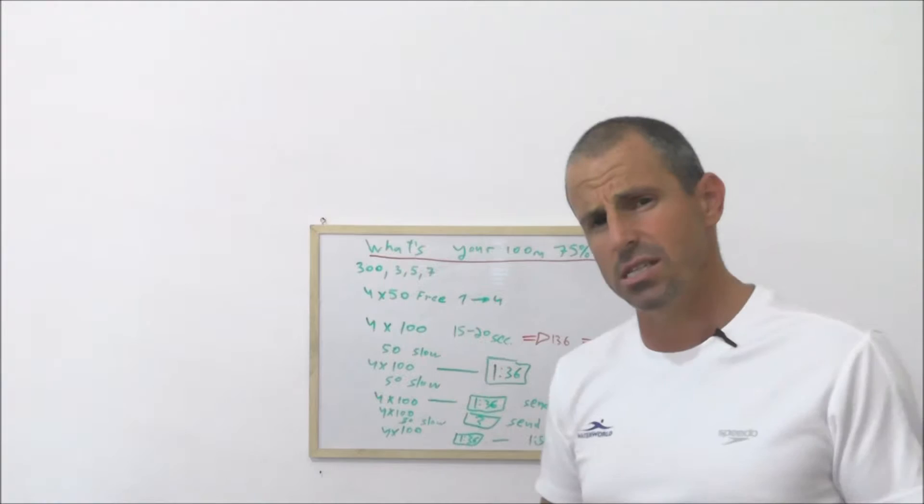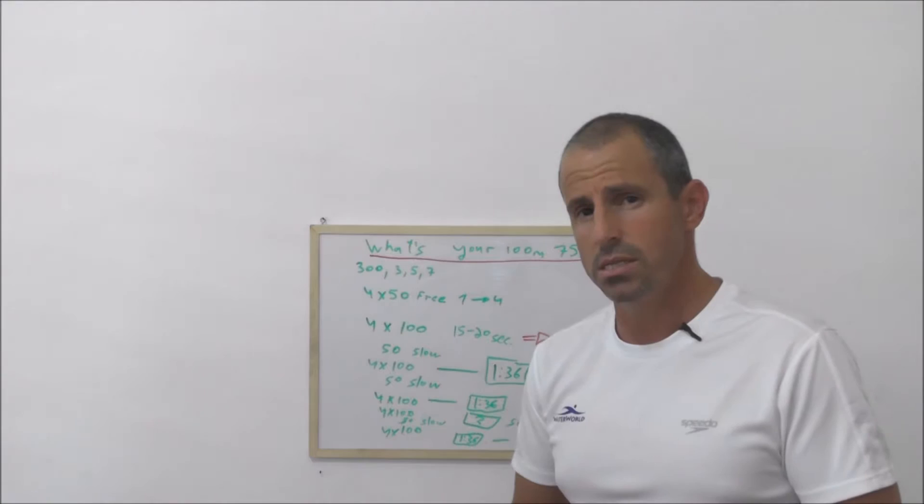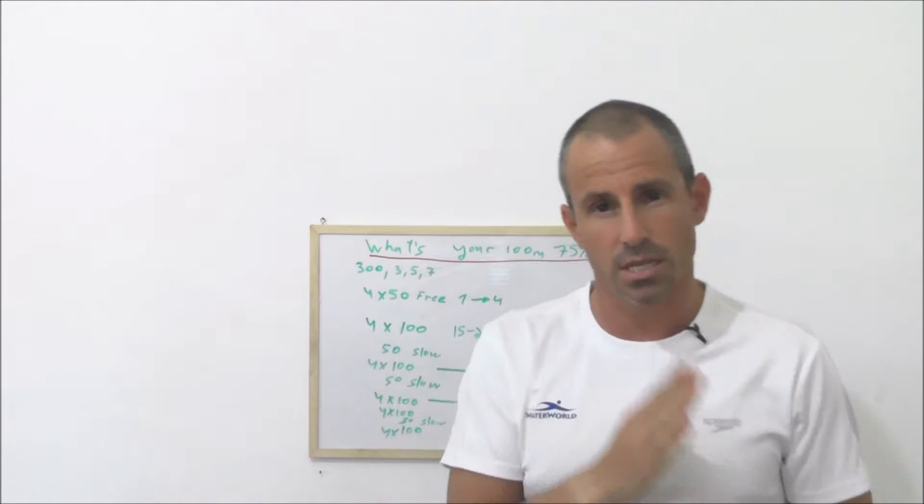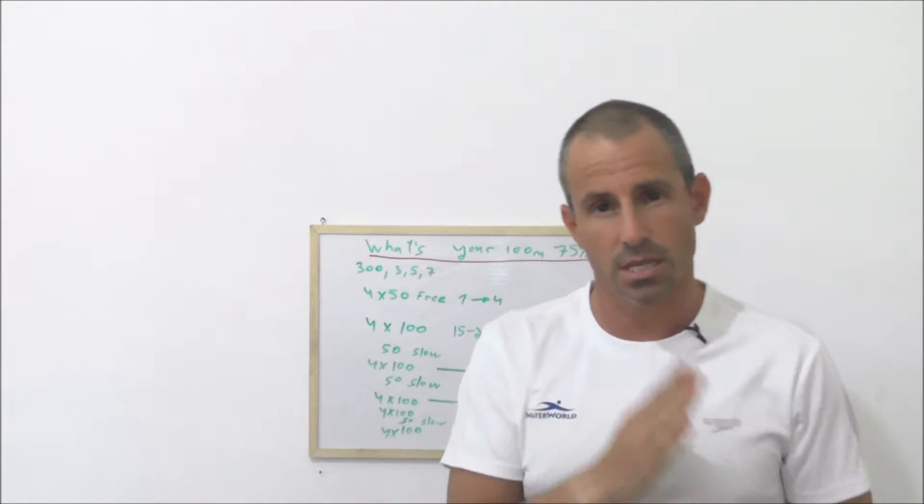The second exercise is warm up: four times 50 increasing pace, but your goal is to control the number of strokes. I don't want you to swim with more strokes. If the first lap is 15 and the second lap is 16, the slow and the fastest are gonna be the same number of strokes.